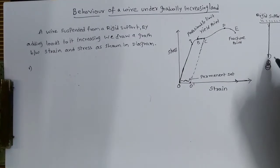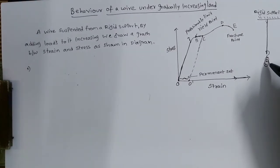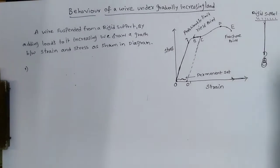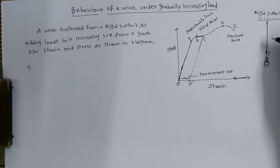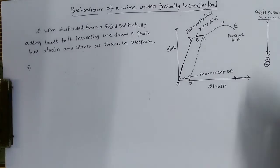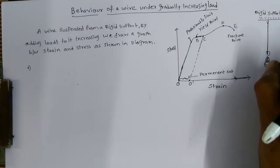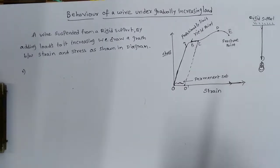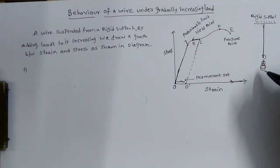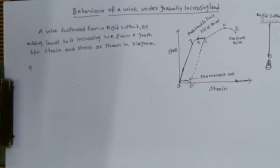Initially, if some load is attached, the wire will be elongated. If you remove the load, it will regain its original position, which we can call elastic nature. If you add some more weight, it will also elongate more. If you remove the weights, again it goes back to the original position. That means up to certain weights, it will regain its original length — that we can call proportional.